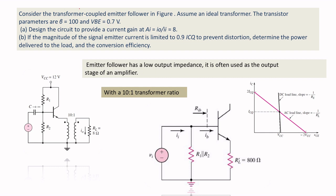The fourth problem considers a transformer-coupled emitter follower. Previously in Class A amplifier problems, we covered RC-based coupling, inductance-based coupling, and transformer-based coupling connected at the collector. Here, the transformer is connected at the emitter — this is an emitter follower configuration where the output is taken from the emitter and input is applied to the base.